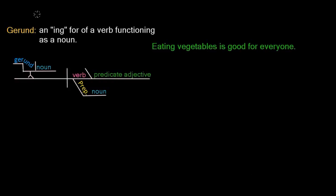Let's take the sentence: Eating vegetables is good for everyone. Our main verb is the linking verb is — a B verb. We ask ourselves, what is? We wouldn't say vegetables is; we might say vegetables are. But in this sentence, you can say eating is. Eating looks like a verb — it's an ing form — and it is our first gerund. So eating is our subject.